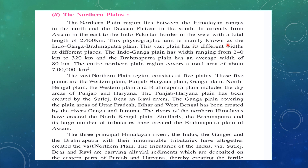This physiographic unit is also known as the Indo-Ganga-Brahmaputra plain, named after its three main rivers. This vast plain has different widths at different places — the Indo-Ganga plain has a width of about 240 km to 320 km, while the Brahmaputra plain in Assam has a width of 80 km. The entire northern plain region covers a total area of about 7,000,000 km².